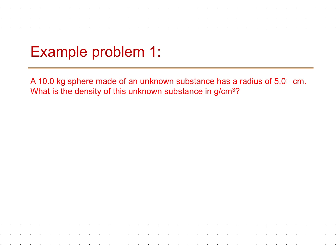Let us do an example problem. A 10.0 kilogram sphere made of an unknown substance has a radius of 5.0 centimeters. What is the density of this unknown substance in grams per centimeter cubed? The mass of the sphere is given as 10.0 kilograms, which has three significant figures. The radius of the sphere is given as 5.0 centimeters, which has two significant figures.